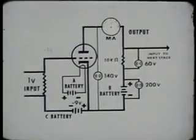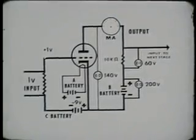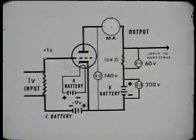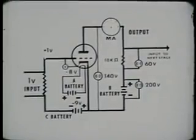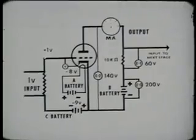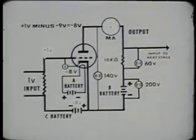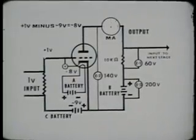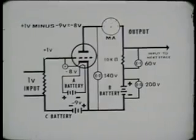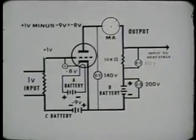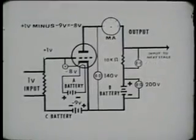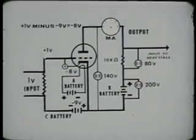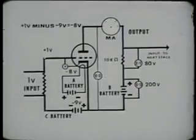When the positive portion of the signal reaches a peak of 1 volt, there is a difference of potential between grid and cathode of minus 8 volts — found by subtracting plus 1 volt from minus 9 volts. This reduction of the voltage difference between the grid and cathode allows more current to flow. If the current flow increases to 8 milliamperes, this causes the voltage across the load resistor to increase to 80 volts. The voltage between the plate and cathode will consequently decrease to 120 volts.